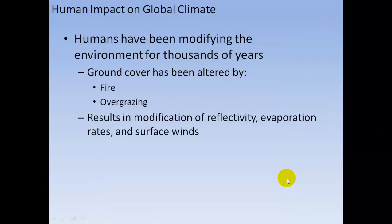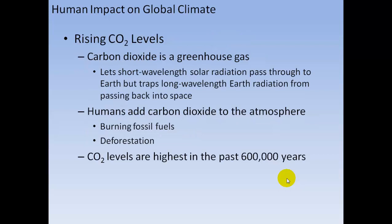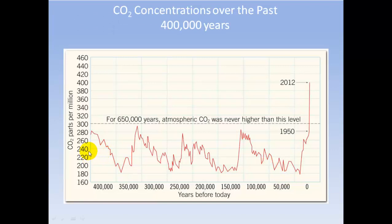Humans have been modifying the environment for thousands of years. Ground cover has been altered by fire and overgrazing, resulting in modification of reflectivity, evaporation rates, and surface winds. Carbon dioxide is a greenhouse gas that lets short-wavelength solar radiation pass through to Earth but traps long-wavelength Earth re-radiation from passing back into space. Humans add carbon dioxide by burning fossil fuels and deforestation. CO2 levels are the highest they have been in the past 600,000 years — after 1950 they skyrocketed, giving today more carbon dioxide in the atmosphere than in at least the past 400,000 years.